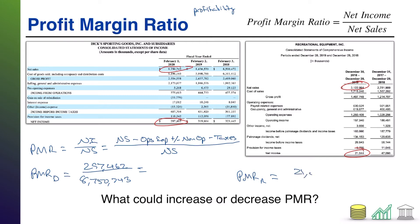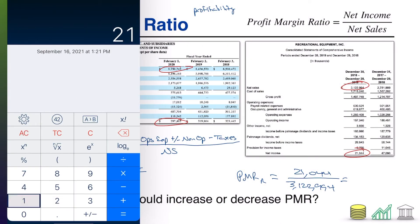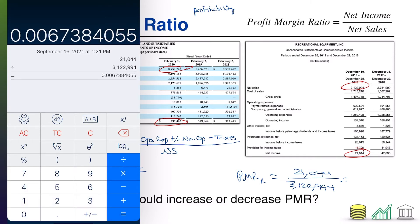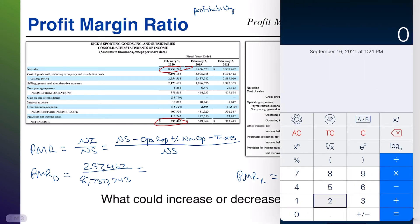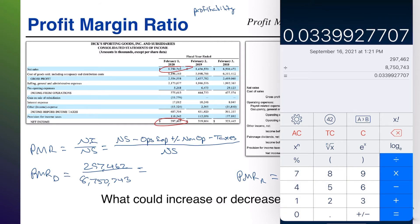For REI, we've got net income of 21,044 over net sales of 3,122,994. Let me pull out my calculator and do the math. REI's 21,044 over 3,122,994 comes out to less than 1% — we'll say approximately 0.7%. And for Dick's, 297,462 divided by 8,750,743 comes out to approximately 3.4%.